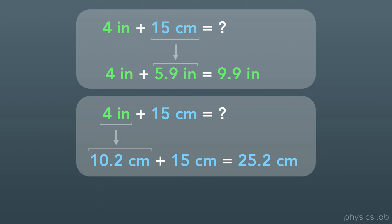And both of these answers are correct, because 9.9 inches equals 25.2 centimeters. They're just in different units. The big thing here is that we can't do math with these two numbers if they're in different units. And that's the biggest reason we're going to have to convert between different units.